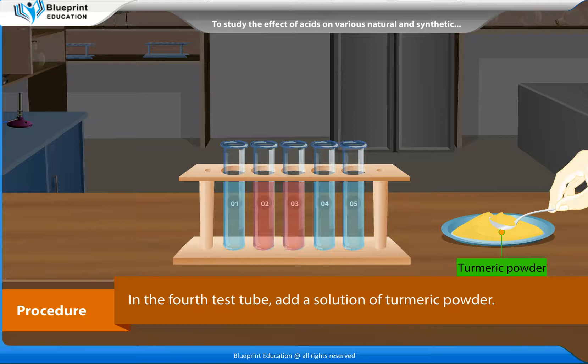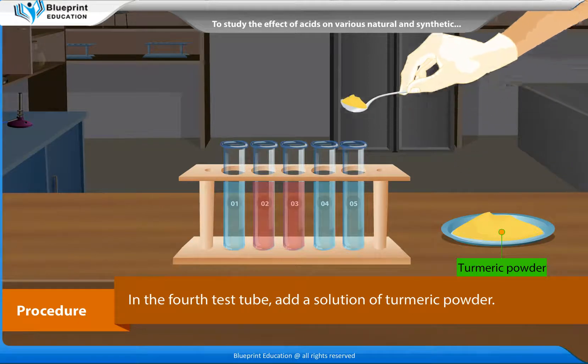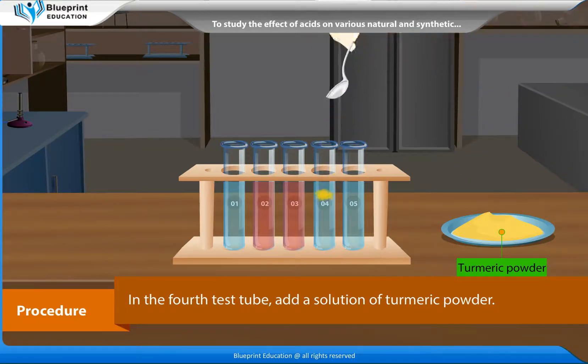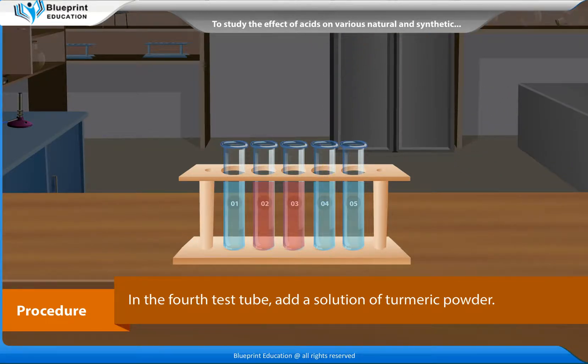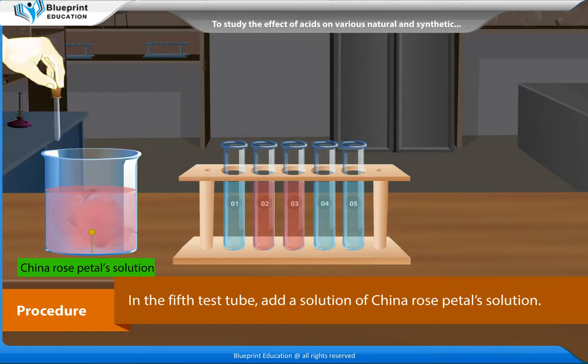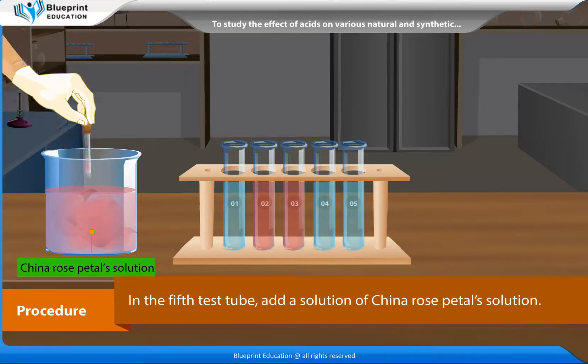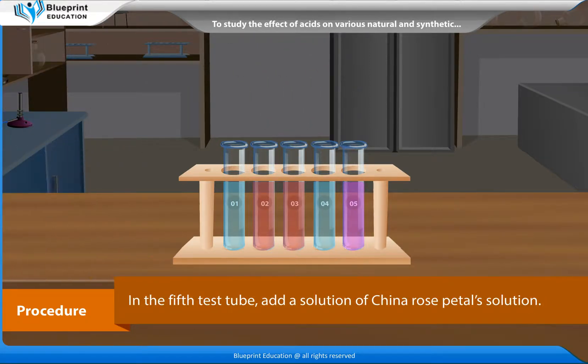In the fourth test tube, add a solution of turmeric powder. In the fifth test tube, add a solution of china rose petals.